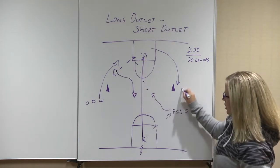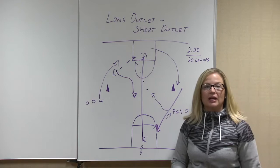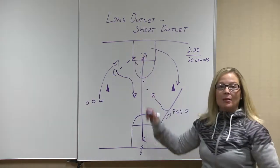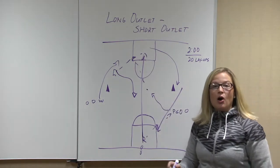Point guard attacks the center circle and now coming back the other end, the wing gets two layups in this drill. One left-handed layup coming down, one left-handed layup on the way back.